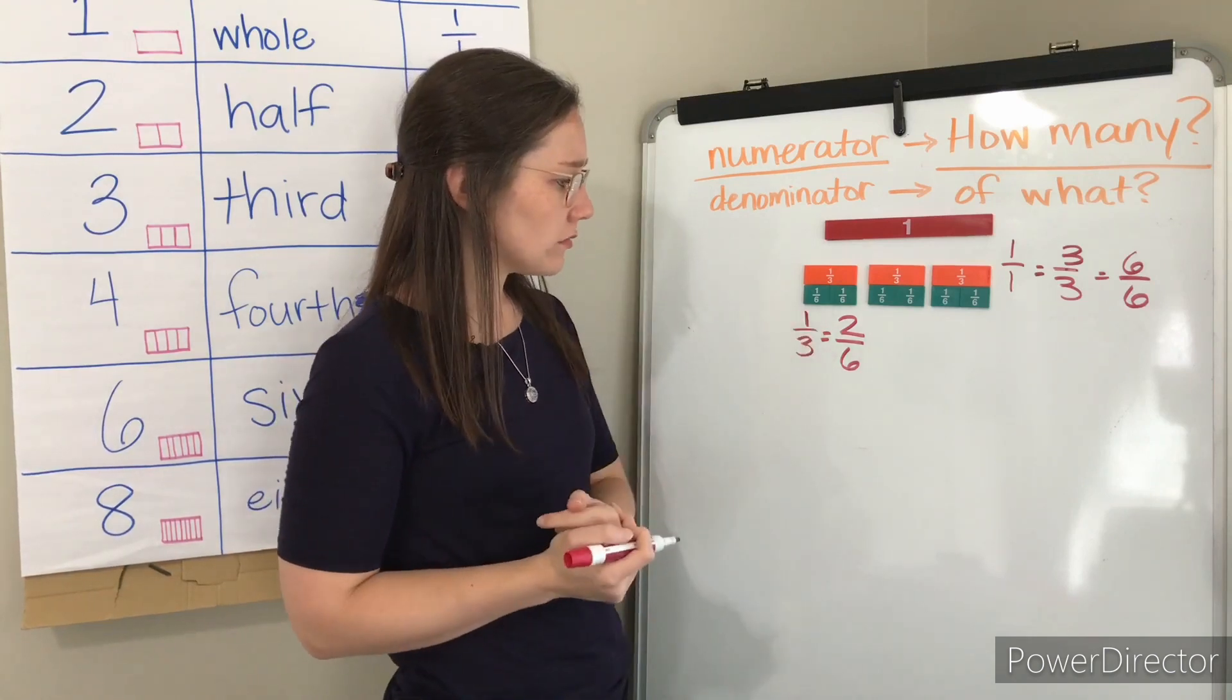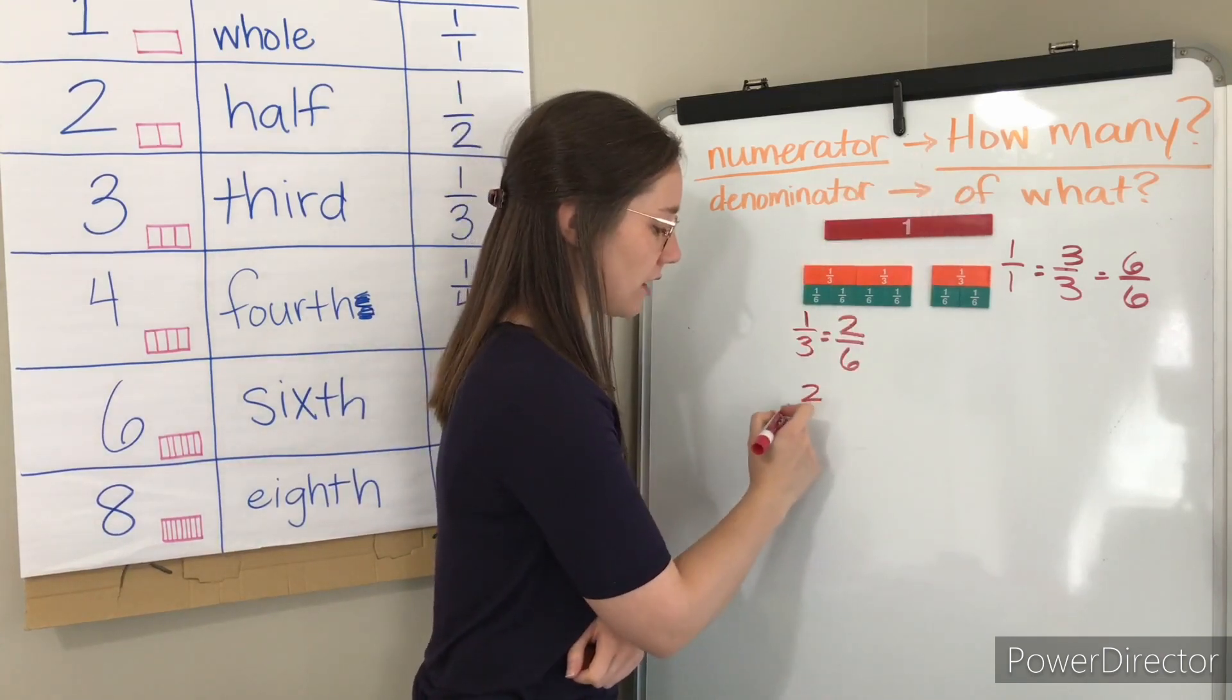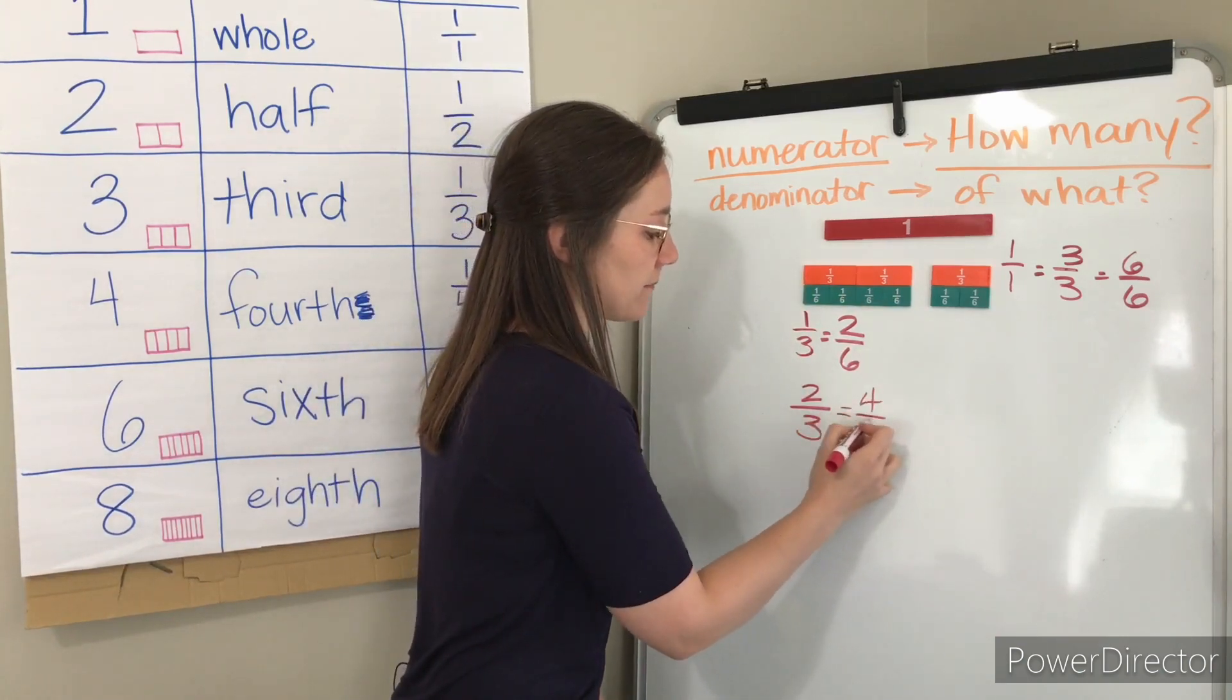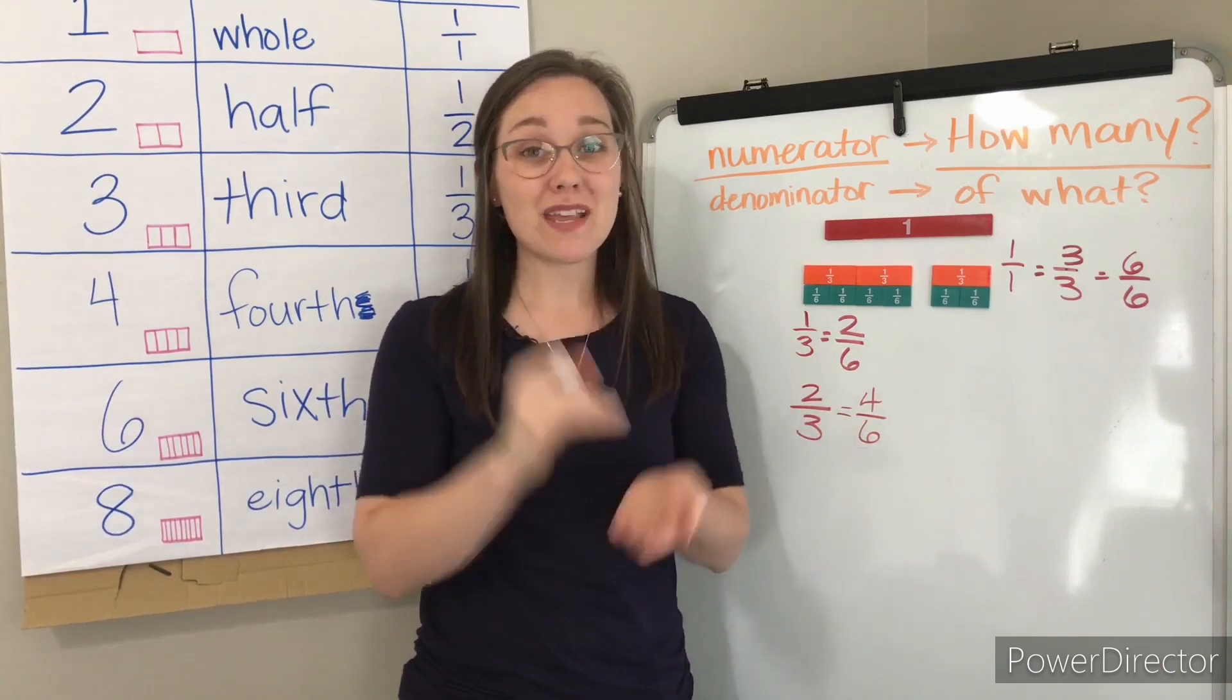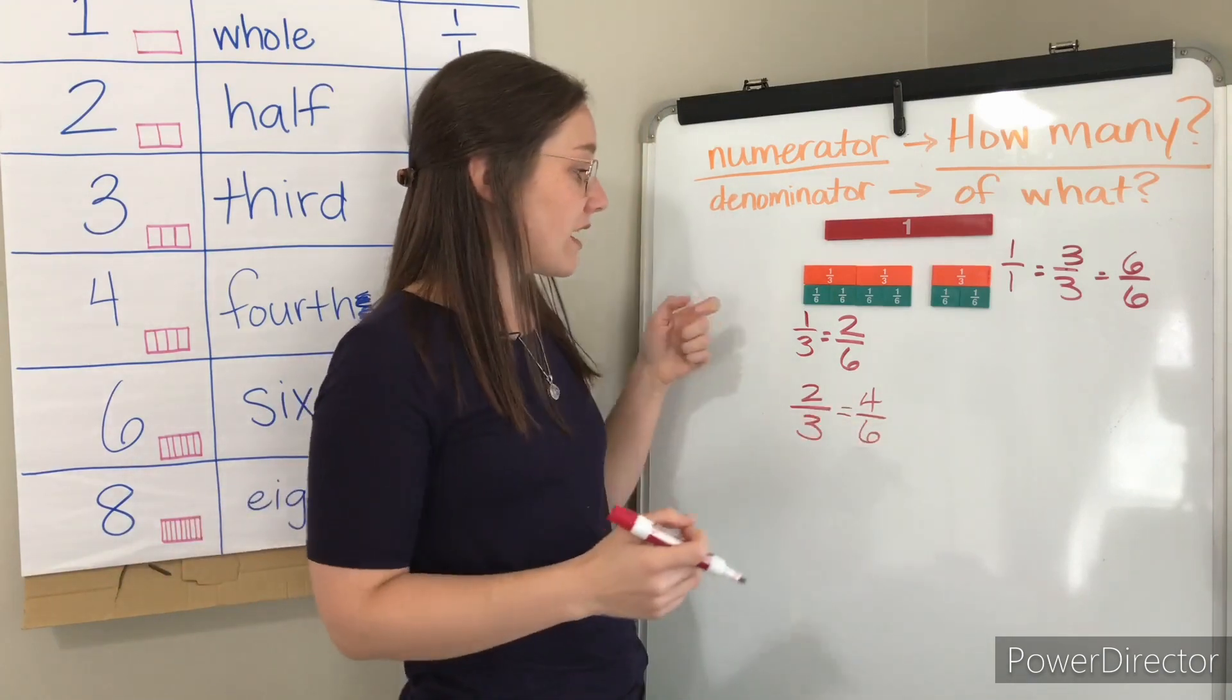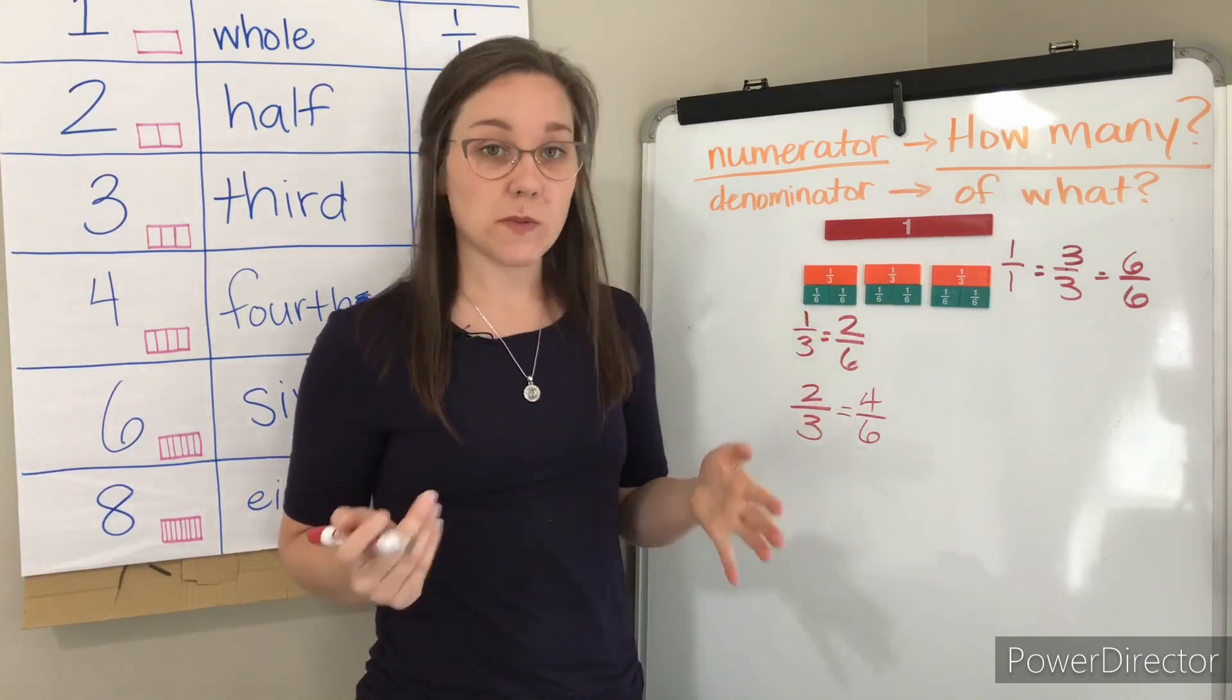What else do we have here? What if instead of just looking at one-third, we look at two-thirds? One, two-thirds. How many? Two of what? Thirds. Well, now to make two-thirds, we don't just have two-sixths. We have one, two, three, four-sixths. So you can see that two-thirds is the same as four-sixths. These are equivalent fractions. Two-thirds and four-sixths mean the same thing. They mean the same amount. If I said you can have two-thirds of a soda or you can have four-sixths of a soda, well, they're the same. You'd be getting the same thing either way. If you can have one-third of a candy bar or two-sixths of a candy bar, well, look. It's the same.